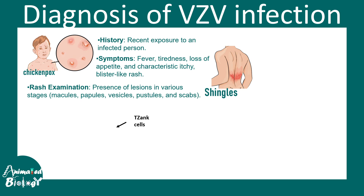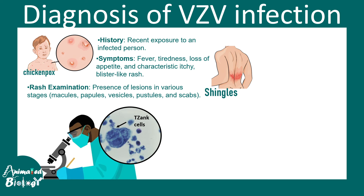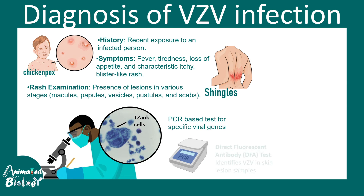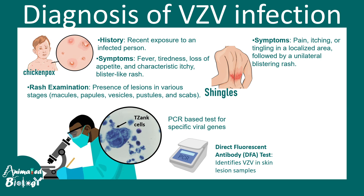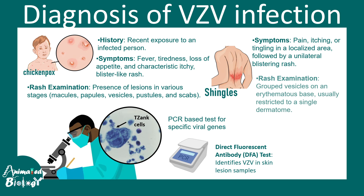Diagnosis is fairly straightforward based on clinical history and the characteristic rash stages — macules, papules, etc. Another method is examining cells from blister fluid, where Tzanck cells can be identified. PCR testing for viral genes is the most accurate test. A direct immunofluorescence test is available but not commonly used for shingles. In shingles, pain, itching, and tingling occur in a localized fashion; the rash may be asymmetric with an erythematous base and is usually restricted to a single dermatome. Pain can persist even after rash resolution.